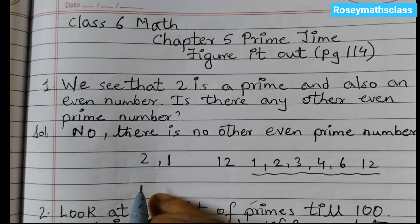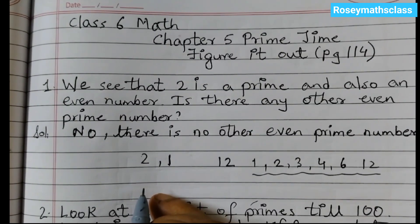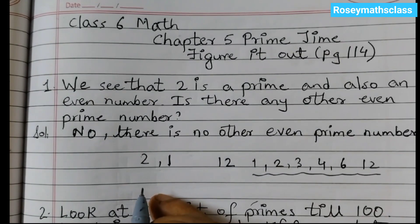Any other even number can be divided by 2, meaning it has at least three divisors: 1, 2, and the number itself. So it cannot be a prime number. Moving on to the next question.